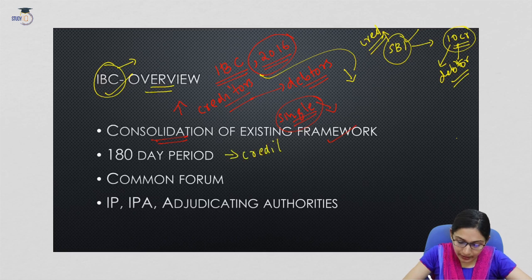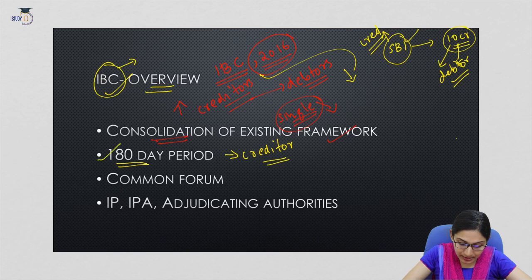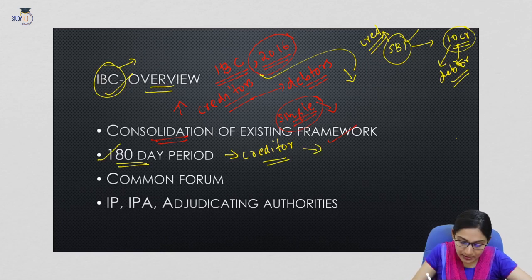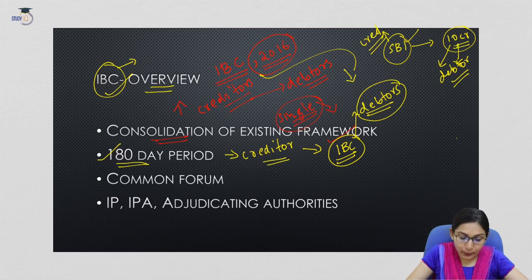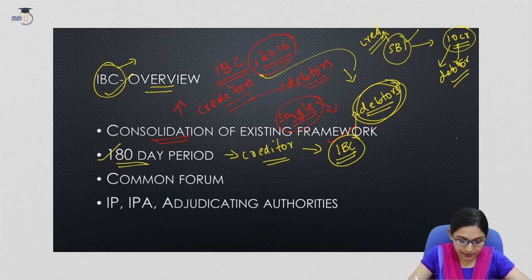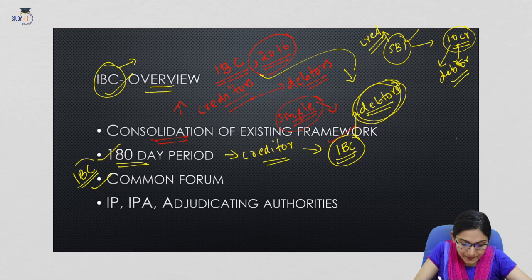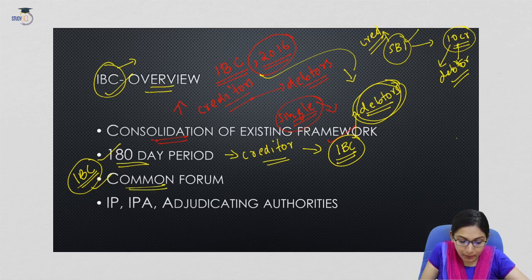The creditor must make decisions to resolve insolvency within a 180-day period. To ensure an uninterrupted resolution process, the IBC provides immunity to the debtors from resolution claims of creditors during this period. The IBC also consolidates provisions of the current legislative framework to form a common forum for debtors and creditors of all classes to resolve insolvency.